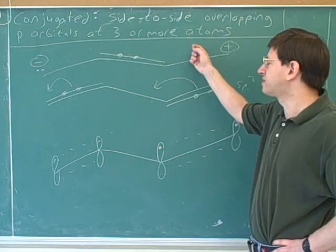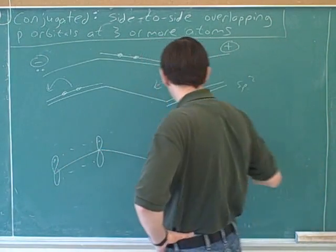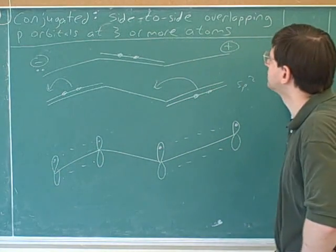None of these pictures by themselves fully convey all the places the electrons are spread out. But this picture shows you more clearly that the electrons can be spread out in all four places.